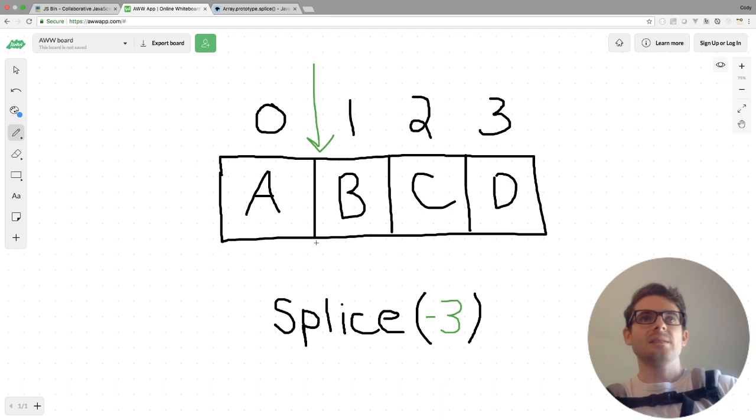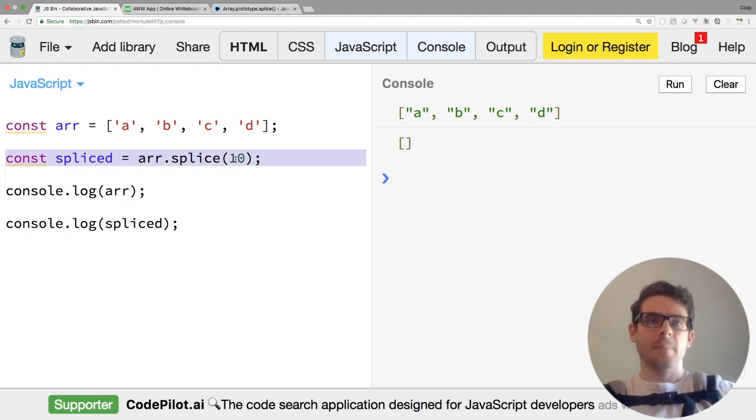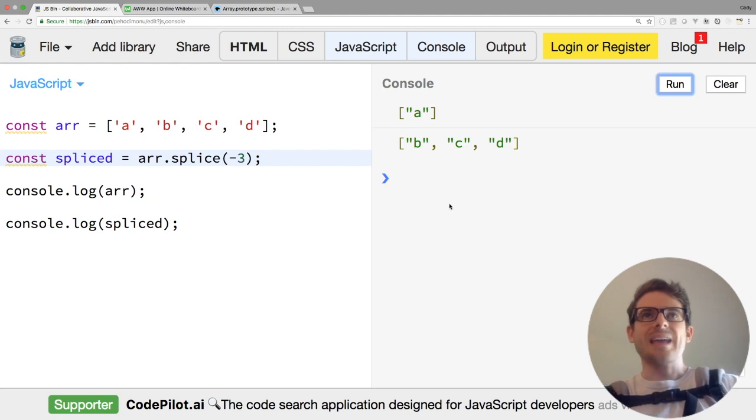And similar to the slice method, we can do negative numbers to go from the end of the array backwards. And if we were to call splice negative 3 on this, it's going to return us a new array with BCD in it. And it's going to remove those elements BCD from this array. So let's go back to JSBin and just try that out. So again, we're doing negative 3. So three elements from the back, we should be left with an array that has A in it. And then BCD is the new array that's returned.